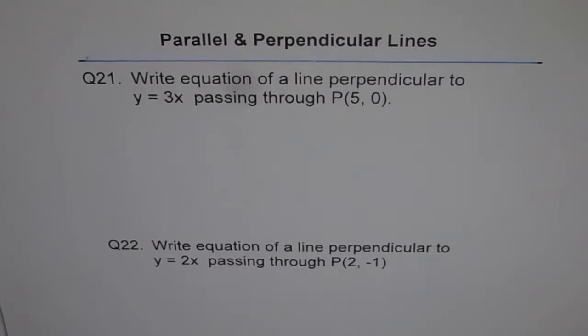Now understand how I am solving this question so that you can solve the next question on your own. Question 22 is a part of your test. Write equation of a line perpendicular to y equals 2x passing through point 2, minus 1. It is a very similar question to 21, so you should not have much difficulty in solving it.